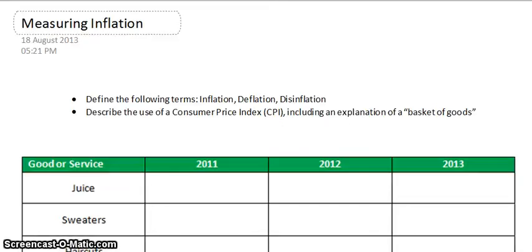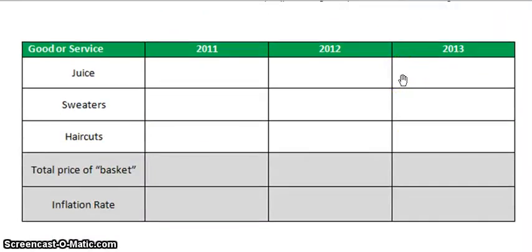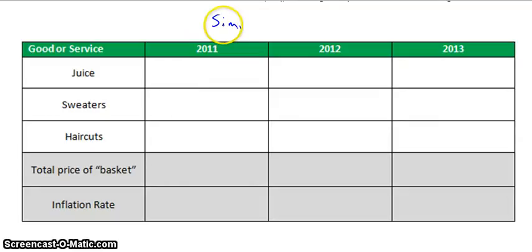You should have already defined the terms that you see there and then the task that you see with the second bullet. So now I'm going to explain how you use a price index to calculate inflation. We're going to go through, first of all, what is called a simple price index, and then we'll go into what's called a weighted price index, which is more accurate to how it's done in the real world.